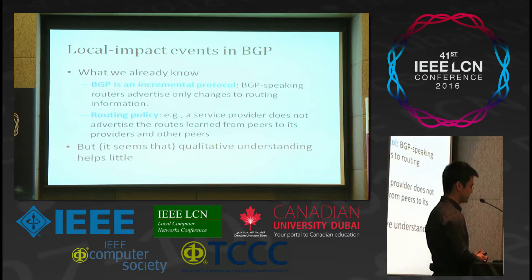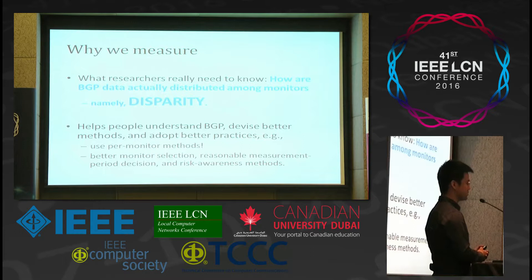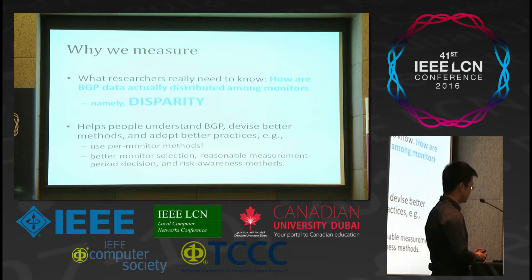We believe that what researchers really need to know is how BGP data are actually distributed among monitors on the internet — namely the disparity of the distribution. Gaining this knowledge helps people understand BGP, devise better methods, and adopt better practices, such as using per-monitor methods, devising better model selection methods, reasonable measurement period selection, and risk awareness methods.